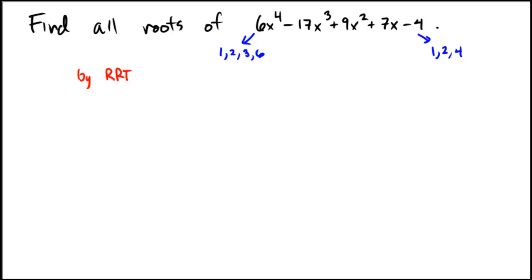So in other words, it could be 1 over 1, it could be 2 over 1, or it could be 4 over 1. On the other hand, it could be 1 over 2, 2 over 2, or 4 over 2. I'm not going to count those separately because I already have them. Then going to the 3, we could have a 1 over 3, we could have a 2 over 3, or we could have a 4 over 3.